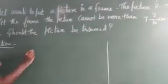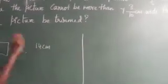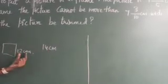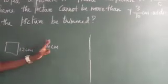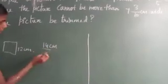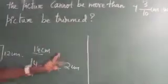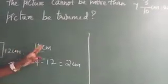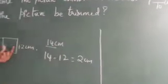Suppose the frame width is 12 centimeters and the picture width is 14 centimeters. How much should be reduced? You have to cut the picture — that is, trim it. Simply subtract 12 from 14 to get 2 centimeters. So the picture must be trimmed by 2 centimeters to fit in the frame.